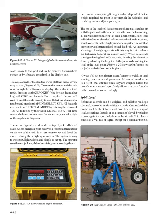The display unit for standard wired platform scales is easy to use (Figure 6-19): turn on the power and the unit runs through the software and displays the scales in total mode. Press the zero key (blue key, not the number key) to zero the channels. Once completed, the unit reads zero and the scale is ready to use. Select channels by number and press the print/select key. All channels can be returned to total mode by entering number 4 (total) followed by the print/select key. If all three scale switches are turned on simultaneously, the total weight of the airplane is displayed.